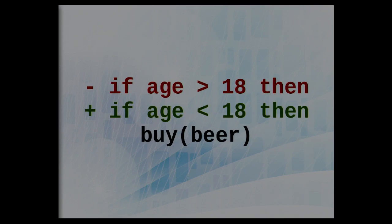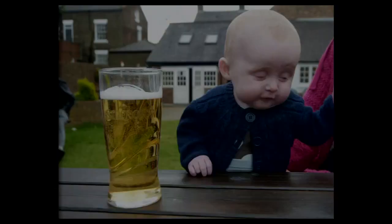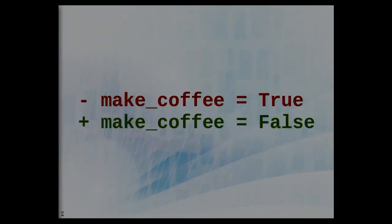A mutation is usually a very small change in the software which somehow changes its behavior. Mutations can come from comparison operators and if statements. If we take the example on the screen, the mutation is replacing the greater-than operator with a less-than operator. Applied to code it becomes: if age is less than 18, then buy beer. Imagine you are an online store and suddenly you start selling beer to small children — and this is not good.